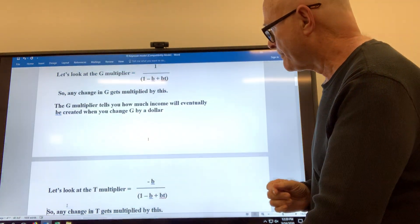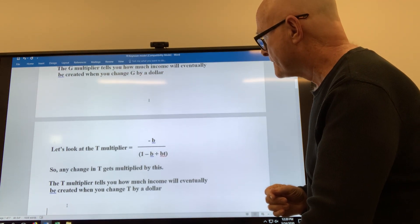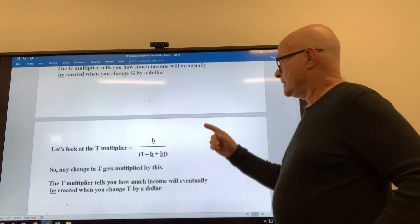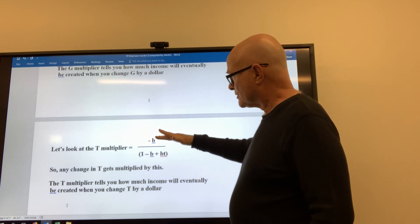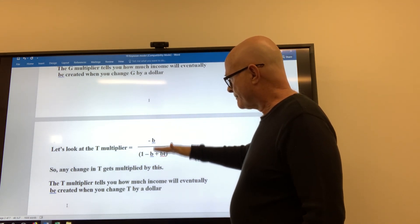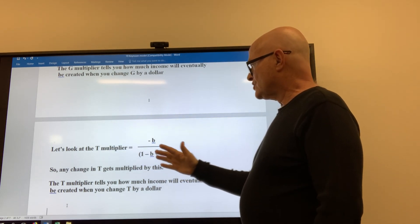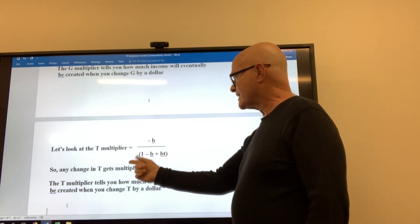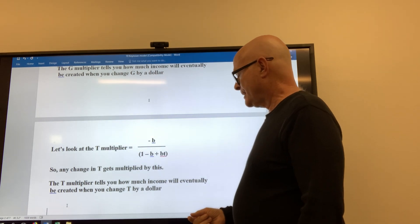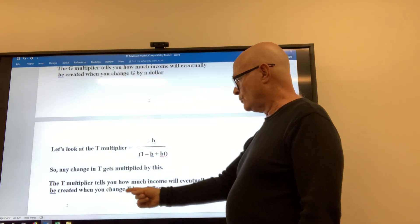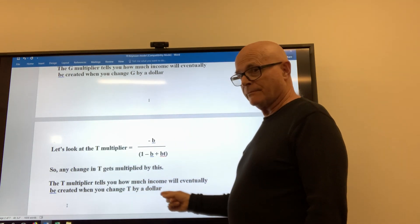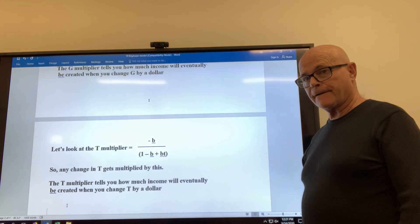The T multiplier is basically the G multiplier times minus b, or you could just put the minus b in the numerator. So any change in your lump sum tax gets multiplied by that. So the T multiplier tells you how much income will eventually be created when we change taxes by a dollar.